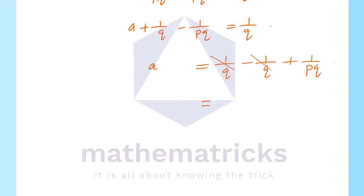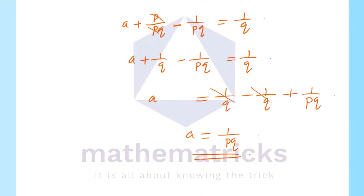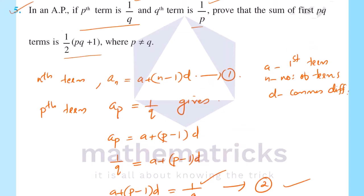This gives a = 1/pq. So we have both a = 1/pq and d = 1/pq. Now we use these to find the sum of the first pq terms.